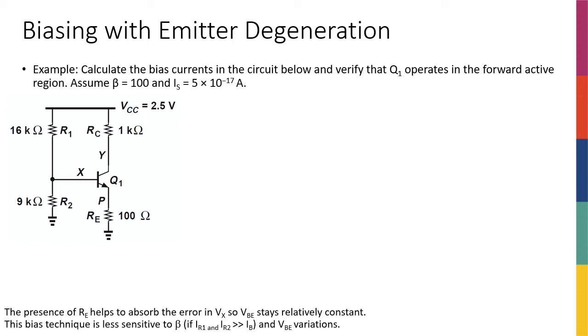The technique we're going to use to make the biasing independent or less dependent on VBE and resistor variations is called emitter degeneration. The idea is very simple - it's basically adding a resistor in the emitter between the emitter terminal of the transistor and the ground.